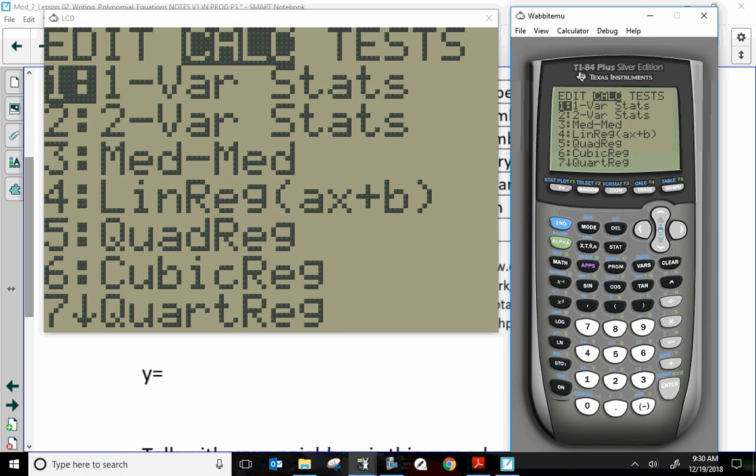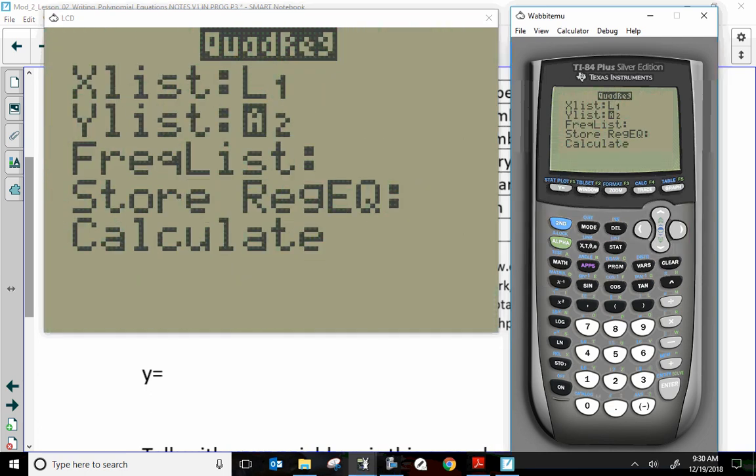So, stat, calculate. And don't forget, I want number five. I want number five here. I want the quadratic regression. So, I'm going to pick number five. Boom. And I am going to calculate this.